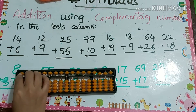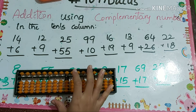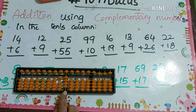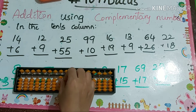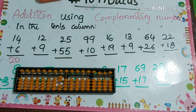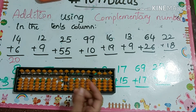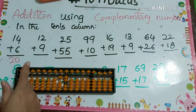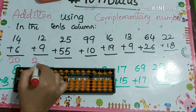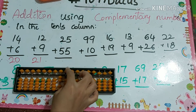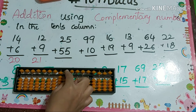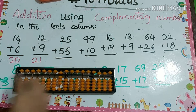First example: 14 plus 6. We can't add directly because we don't have sufficient beads, so we add plus 10 minus 4. Next, 12 plus 9: plus 10 minus 1, so the answer is 21. Next, 25 plus 5: plus 10 minus 5, so the answer is 80.